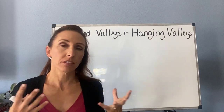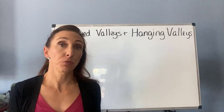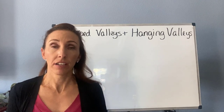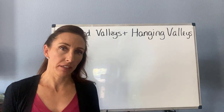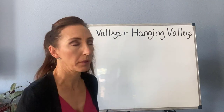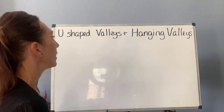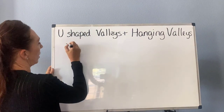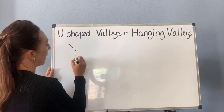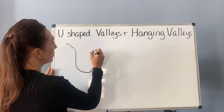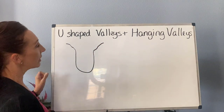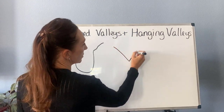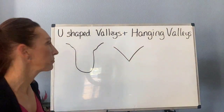When we talk about glaciers, we often talk about how U-shaped valleys are a dead giveaway that an area used to have glaciers in it — Yosemite is a very famous example of that. Looking at a cross section, the valleys that a glacier cuts really do look like a U, while the valleys that water cuts often look like a V.